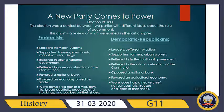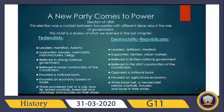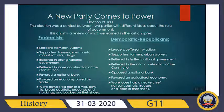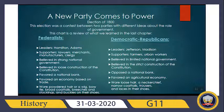This slide starts with a new party coming to power, and it was the election of 1800. This election was a contest between two parties with different ideas on how to control the government. On the left chart, you can see the Federalists with their characteristics. Federalists made Hamilton and Adams their representatives and leaders. Their supporters were mainly lawyers, merchants, manufacturers, and clergy. They believed in a strong national government and loose construction of the Constitution. They favored a national bank and an economy based on trade, and they wore powdered hair or a wig, bow tie, breeches, stockings, and buckles on their shoes.